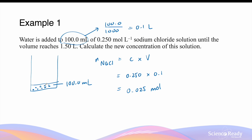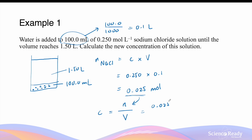So before the dilution, in this 100 mL sodium chloride solution, I have exactly 0.025 moles. After adding water, I've reached a new volume of 1.5 liters. But regardless of how much water was added, the number of moles of sodium chloride remains 0.025 moles. The new concentration is 0.025 moles divided by 1.5 liters, giving a concentration of 0.0167 mol/L — or 0.0167 M (capital M for molar).